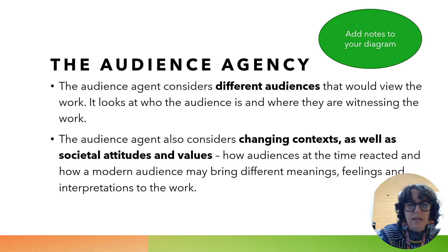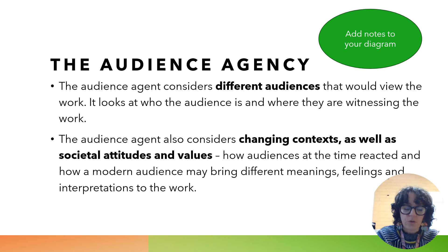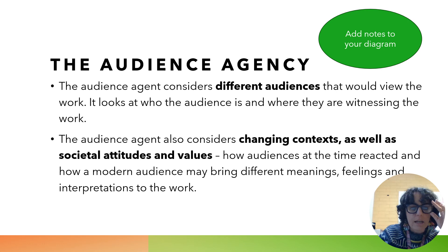The next one is the audience agency. When we look at the audience agent, we're considering different audiences that would view the work — who the audience is and where they're witnessing the work. We can consider that both in the past when the work was made and in the present when the work might still be being viewed by contemporary audiences. The audience agent also considers changing contexts as well as changing societal attitudes and values — how did audiences react at the time, and how does a modern audience bring different meanings, feelings and interpretations to the work?